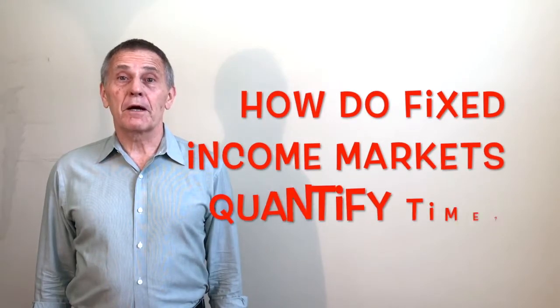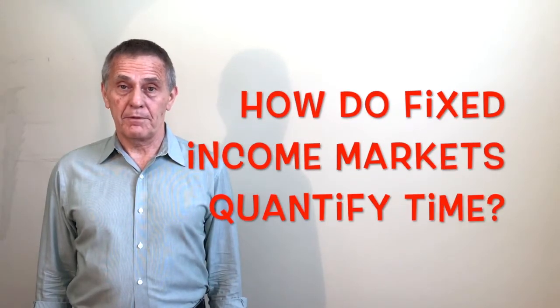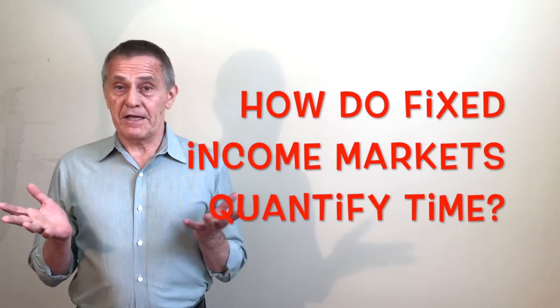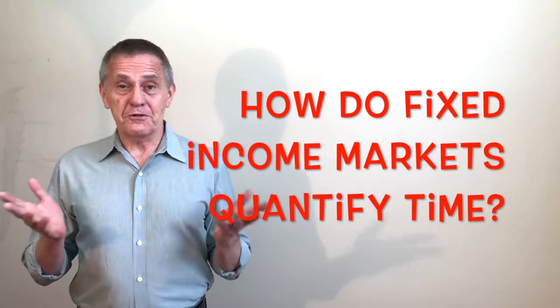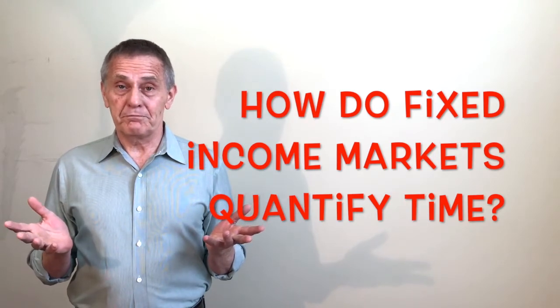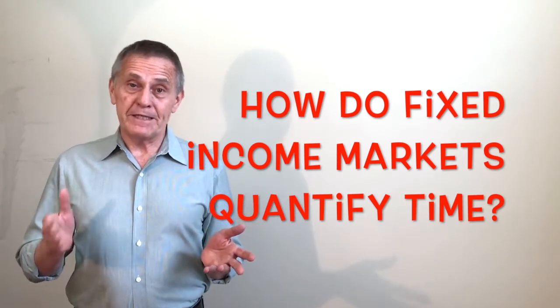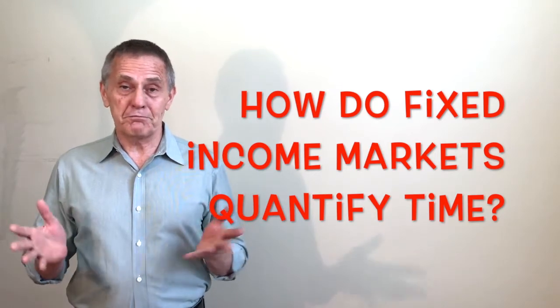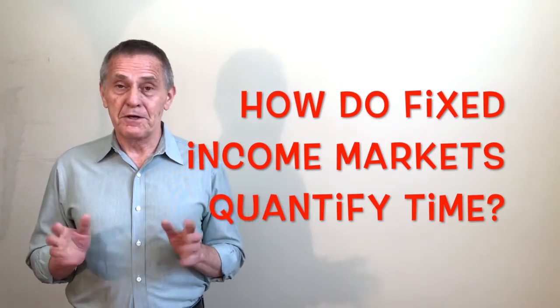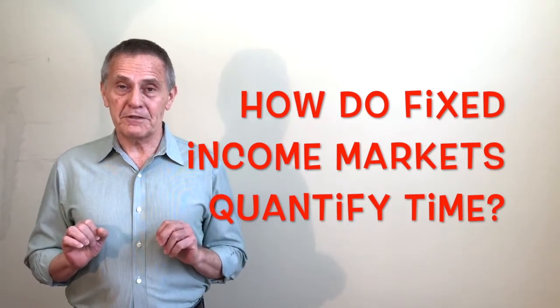How do fixed income markets quantify time? Quantifying time might seem like an obvious issue. There's days and years dictated by the solar cycle. There's hours, minutes, and seconds, perhaps a man-made arbitrary measure that some people date back to the Sumerians or at least the ancient Middle East.